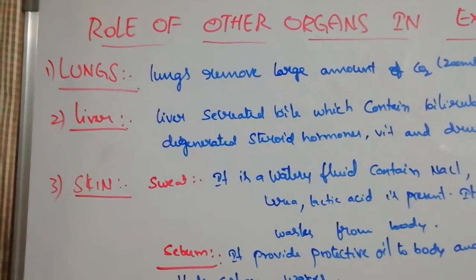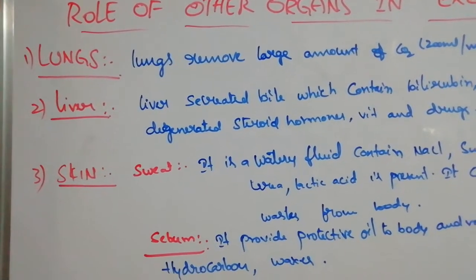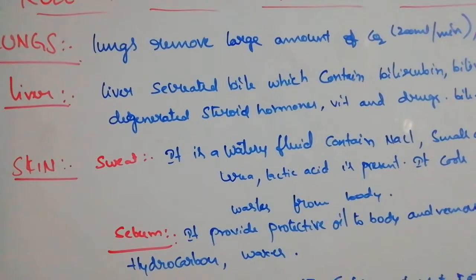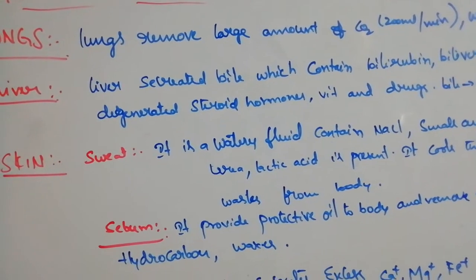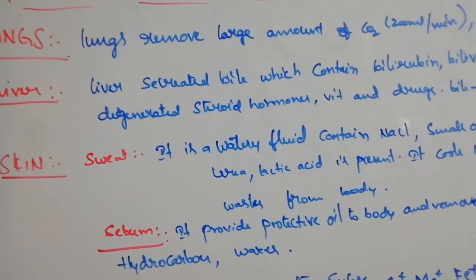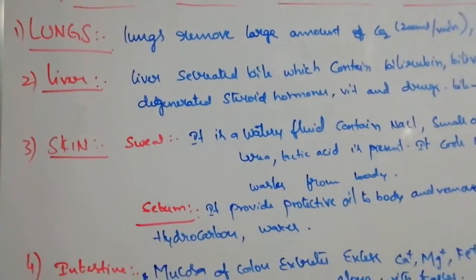First organ lungs removing carbon dioxide. Next liver. Liver is removing the metabolites, bilirubin, bile verdine, cholesterol, vitamins, drugs all through the bile which is released into the intestine and through the fecal matter it is excreted out.